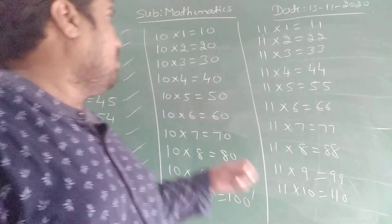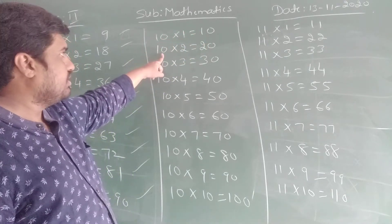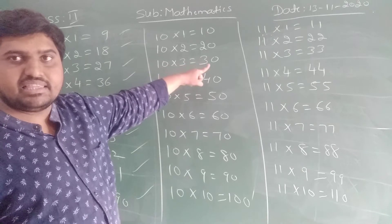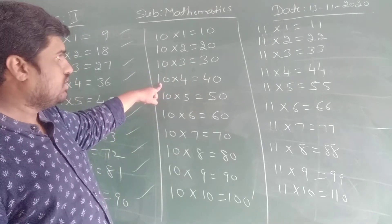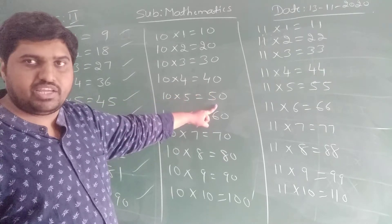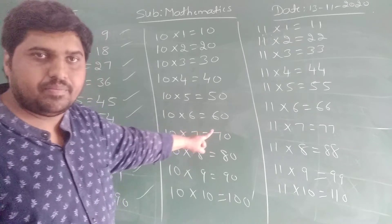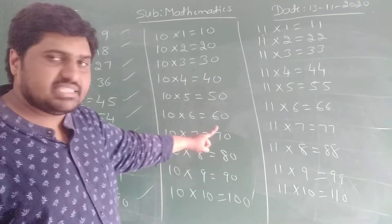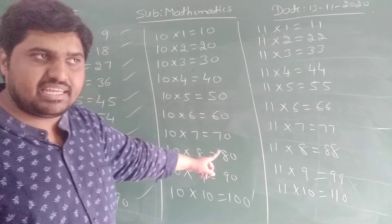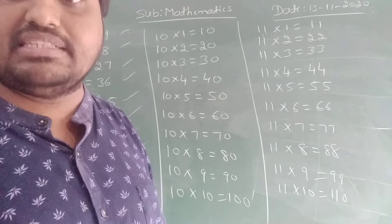Now, similarly, come to the 10 times table. 10, 1 is 10. 10, 2 is 20. 10, 3 is 30. 10, 4 is 40. 10, 5 is 50. 10, 6 is 60. 10, 7 is 70. 10, 8 is 80. 10, 9 is 90. 10, 10 is 100.